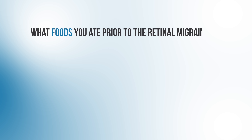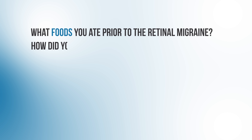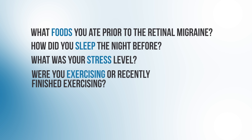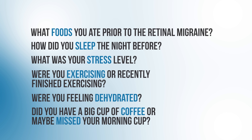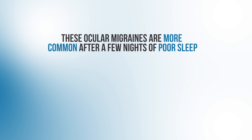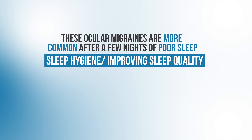Pay attention to things like what foods you ate prior to the retinal migraine, how you slept the night before, your stress level, whether you were exercising, whether you felt dehydrated, or whether you had a big cup of coffee or missed your morning cup. Try to be detailed so you can analyze the information later. Once you have enough entries, we can identify the triggers responsible for your symptoms. For example, we may recognize that ocular migraines are more common after a few nights of poor sleep, and then talk about improving sleep quality.